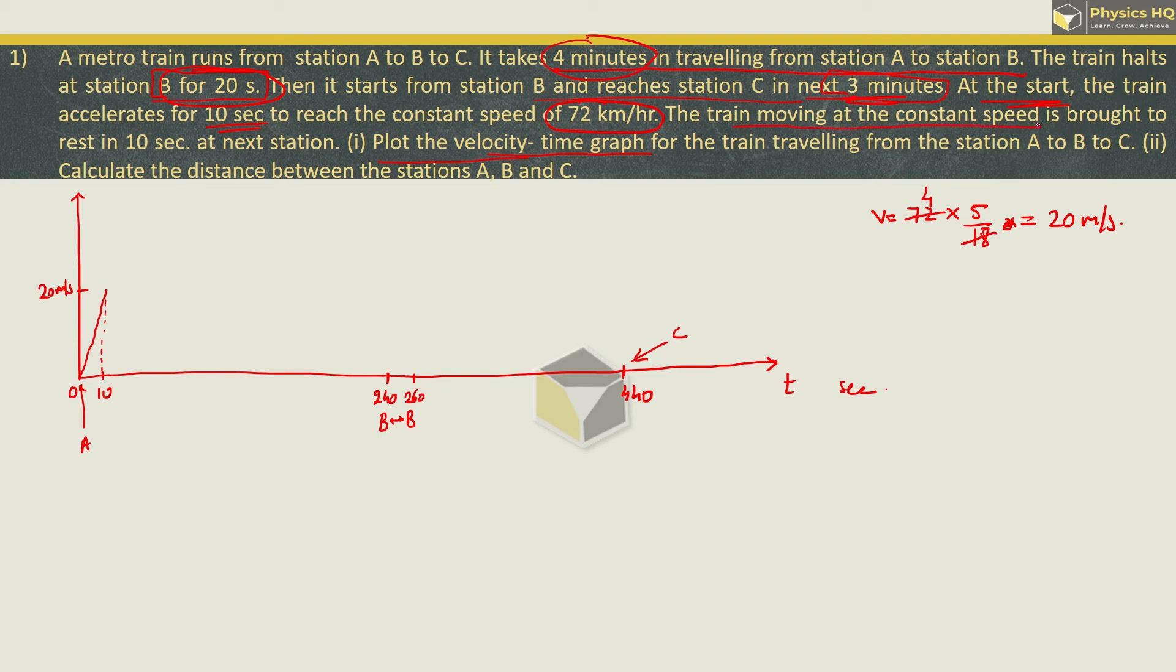The train moves constantly at the same speed and it is brought to rest in 10 seconds at the next station. Similarly, once again from 260 it starts, at 270 seconds at the same speed of 20 meter per second, it again gains the speed of 20. It travels with the speed and decelerates in the final 10 seconds. So at the end of 430, the train halts at the next station. So this is the graph which we have been asked to make.